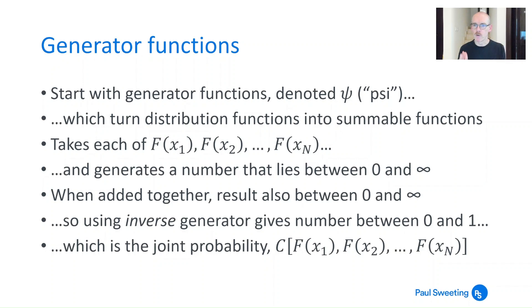So distribution functions lie between 0 and 1, the generator function gives you something which is between 0 and infinity. You can then just add all these generated numbers together, the generator function applied to each of those individual distribution function numbers, and you get a result which is also between 0 and infinity. And then if you use the inverse of the generator that gives you again a number between 0 and 1. So you sum up individual probabilities and when you combine them you end up with a single probability and this is the joint probability c(F(x₁), F(x₂), all the way up to F(xₙ)).